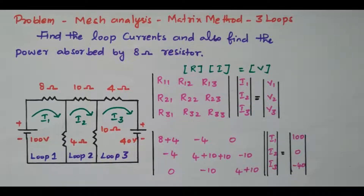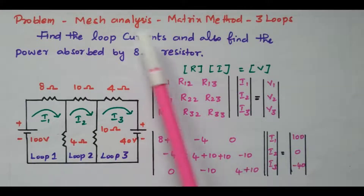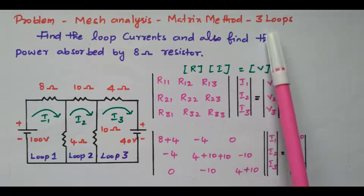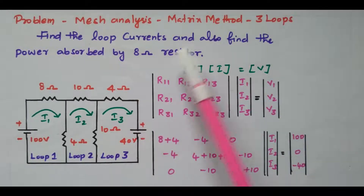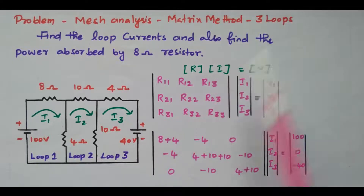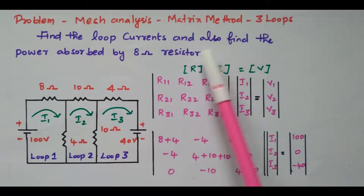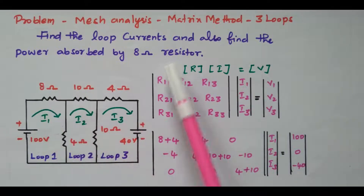Welcome viewers. In this video, we will see the mesh analysis by solving the equation using the matrix method, containing a network with three loops. We will cover mesh analysis by matrix method having three loops. The question is: find the loop current and also find the power absorbed by the 8-ohm resistor.